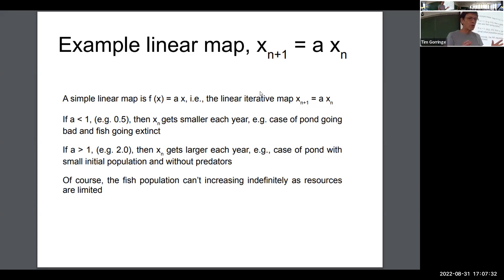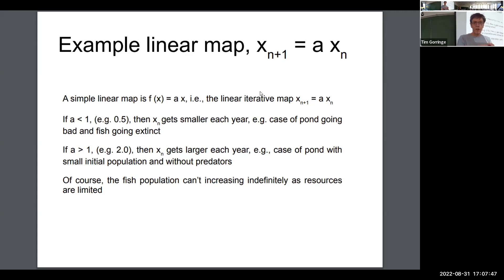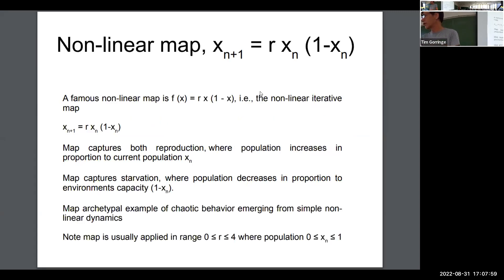Of course, if this is fish in a pond or humans on Earth, the populations can't just grow forever. There are going to be some limits based on resources, food, and space that will limit the population. So this linear map is not very realistic for populations of fish or humans.